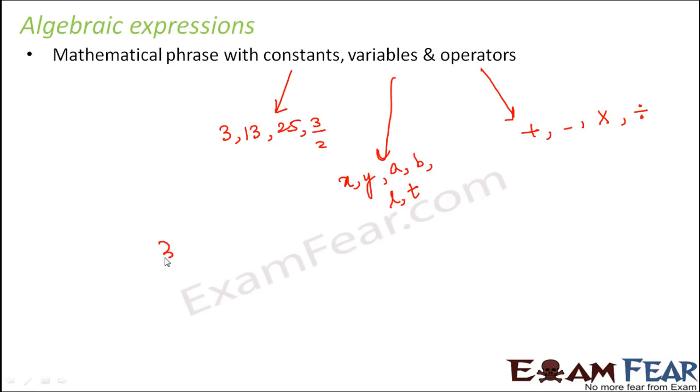For example, if you write something like 3x minus 5, this is an algebraic expression. It contains constants like 3 and 5, variable like x, and operators like minus.